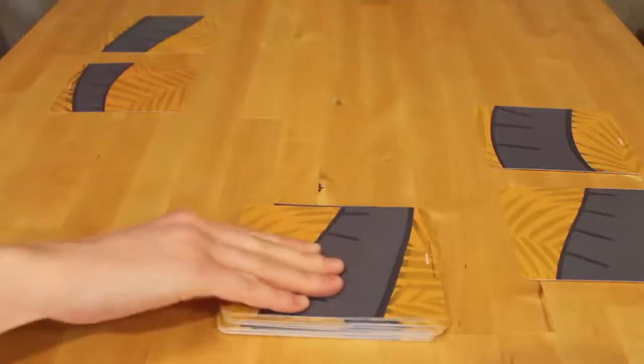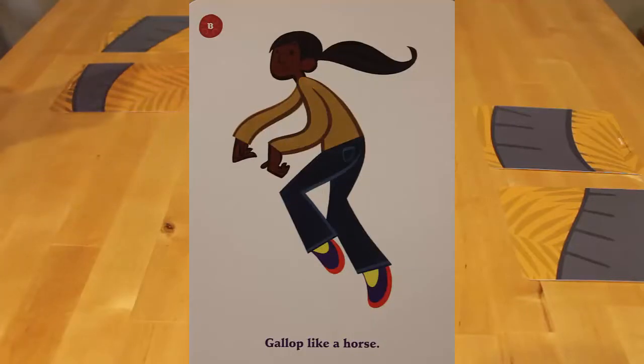If a player draws a card that is a repeat of a trunk piece they already have, it replaces the old card in the memory sequence.